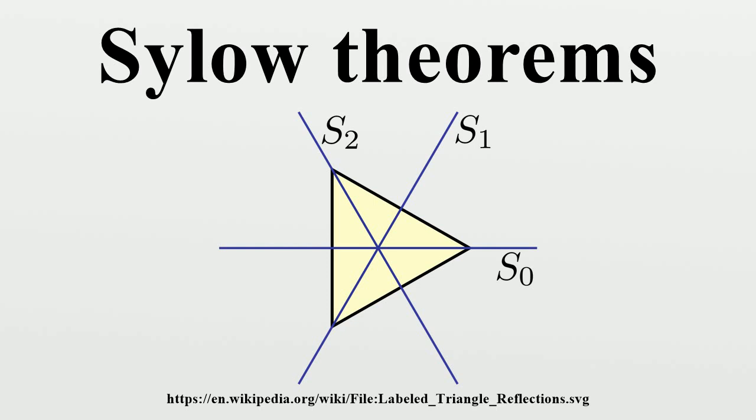Theorem 2: Given a finite group G and a prime number P, all Sylow P subgroups of G are conjugate to each other, that is, if H and K are Sylow P subgroups of G, then there exists an element G in G with G^(-1) H G equals K.